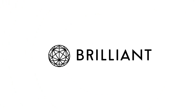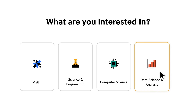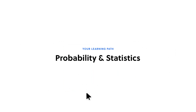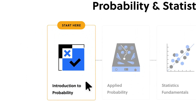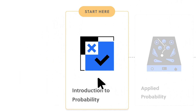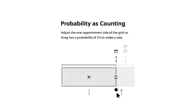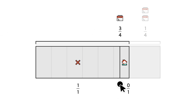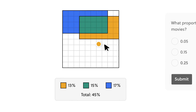Brilliant.org is a great way to learn computer science and data science via concise, bite-sized lessons. There are thousands of topics in each of these subjects, from statistics, to probability, to artificial intelligence, to programming, with new lessons being added every month.